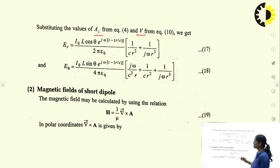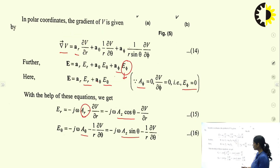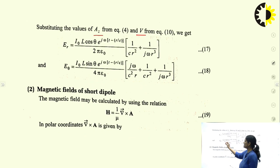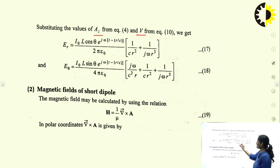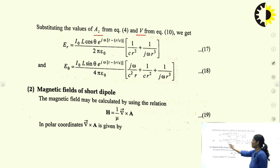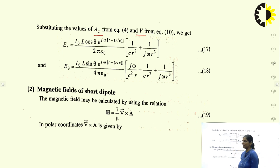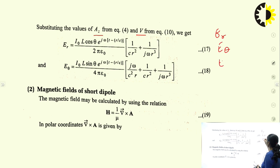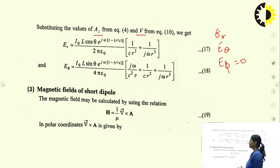Substituting Az and V into the expression for E_θ, we get E_θ = i_0 * l * sinθ * e^(j(ωt - r/c)) * [jω/(c²r) + 1/(cr²) + 1/(jω r³)] / (4π * ε_0). So the electric field components are E_r and E_θ; E_φ is equal to zero.